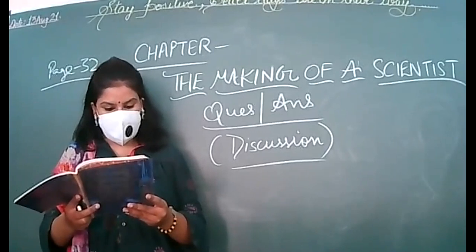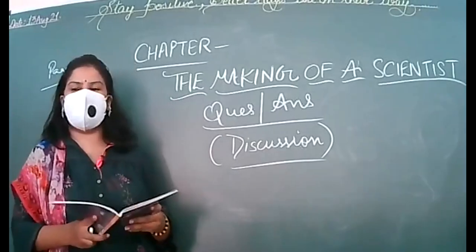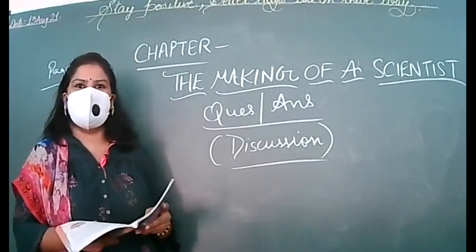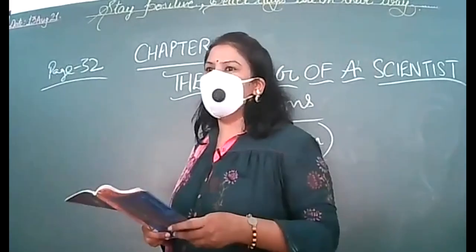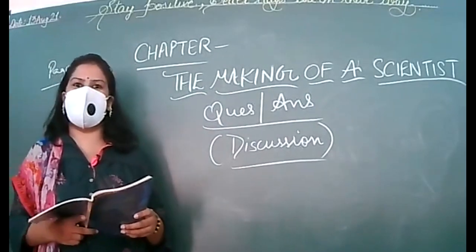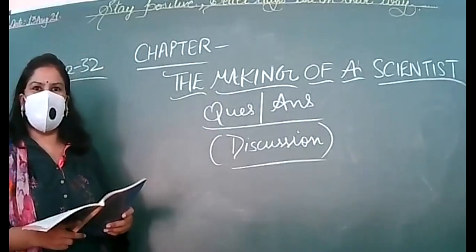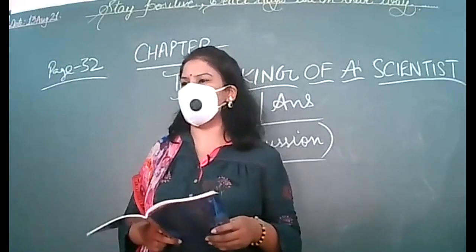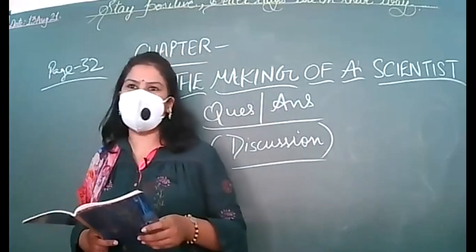So I was talking about what lesson does Ebright learn when he does not win anything at a science fair. Firstly he displayed slides of frog tissues and could not bag any position, but then he thought about why he could not make it. Everybody who was a position holder did one or other kind of experimentation. So he learned a lesson: to be noticed by panel of judges or to bag any position in the science fair he has to do experimentation. Experimentation is the base of winning here, not only display.